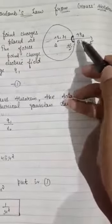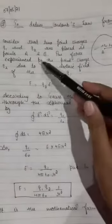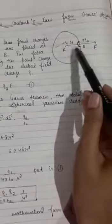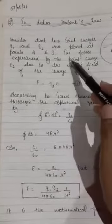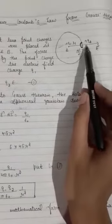So just let's start what I have taken into consideration. Consider that two point charges q1 and q2 are placed at points A and B.